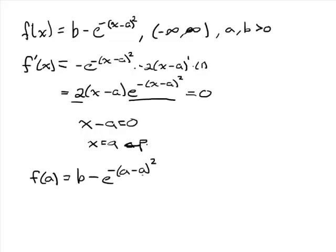Well, what's going to happen here? a - a is zero. Zero squared is zero. Negative zero is zero. We get b - e^0. This just comes out to be b - 1.